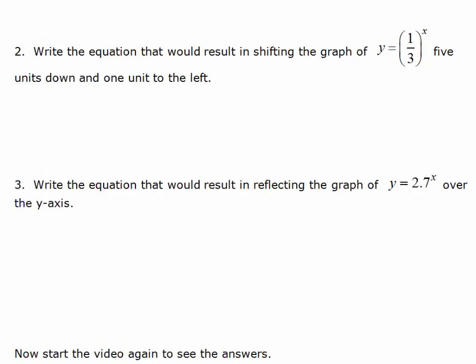Write the equation that results in shifting the graph of y equals one-third to the x, 5 units down and 1 unit to the left. To shift a graph 5 units down, we subtract 5 from the function. To shift it to the left, we add 1 to the x. There's your new function. And to write the equation that results in reflecting the graph of y equals 2.7 to the x over the y-axis, you take the opposite of x, so your new function would be 2.7 to the negative x.